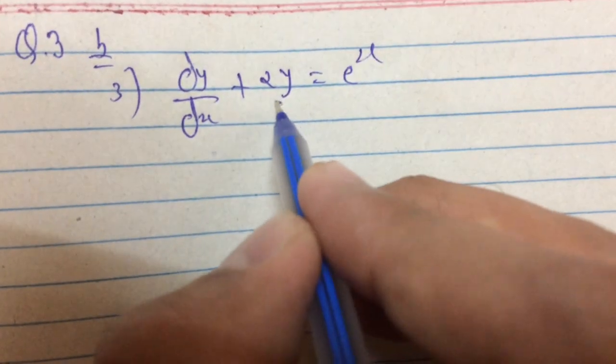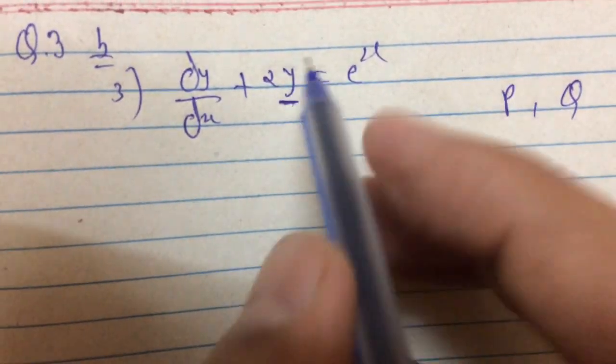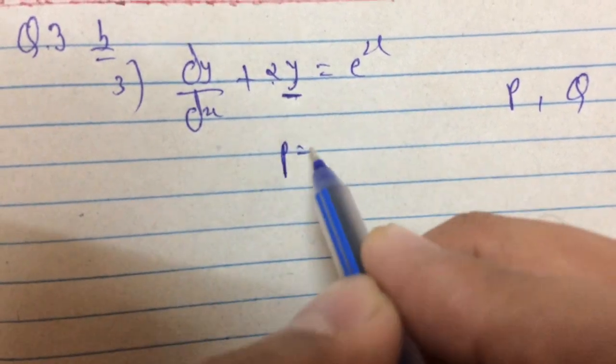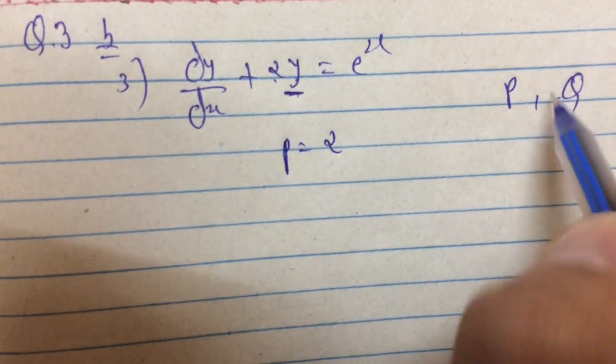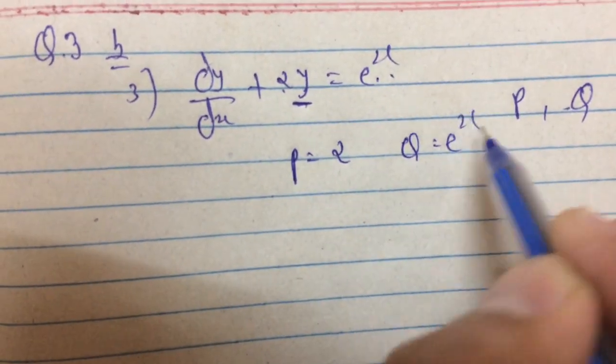This equation is in P and Q form. Our P term is the coefficient of y, and Q is the right-hand side value, which is e raised to x.